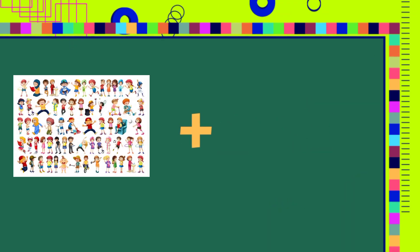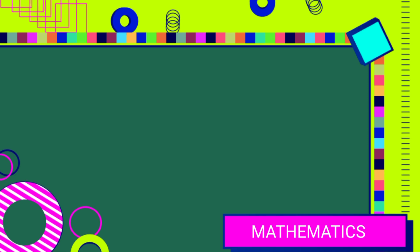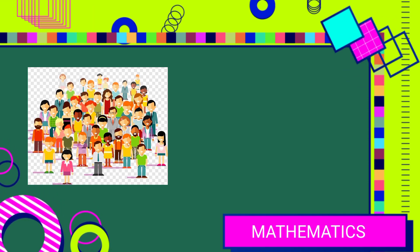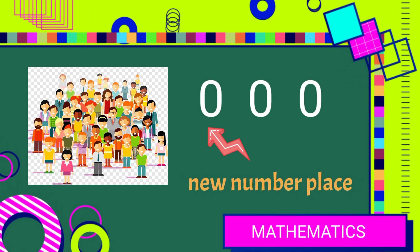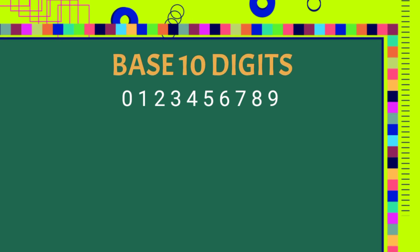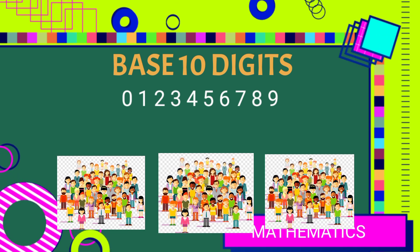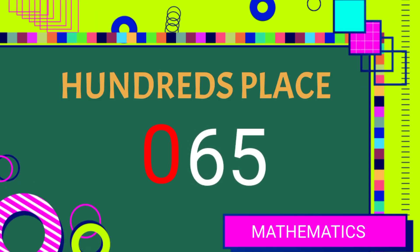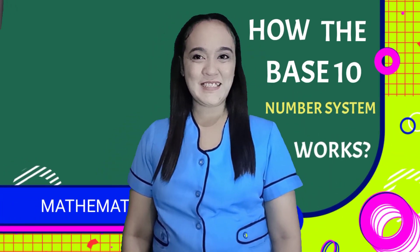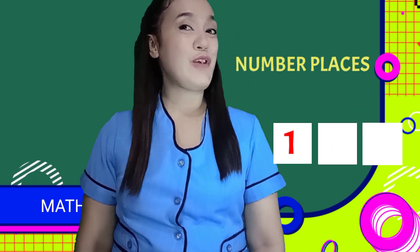If we already count 99 persons and add one more, we now have exactly 100 persons. And if we make a group from these 100 persons, we can use a new number place to count. We could now count how many groups of 100 persons attended. It is called the hundreds place because we use it to count groups of 100. And now, are you starting to see how the Base 10 number system works? It uses different number places to represent different sizes of groups that we use to count.